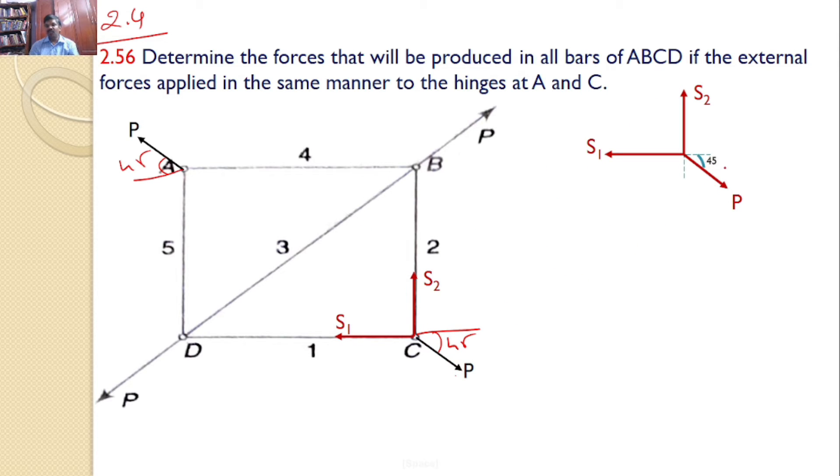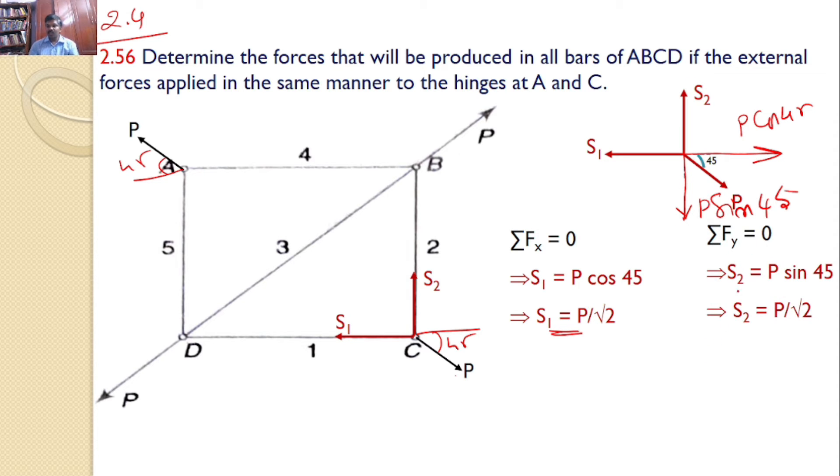And you know that P makes an angle 45 with the horizontal. So, you can resolve this force P along x-axis and y-axis. The horizontal component becomes P cos 45. The vertical component becomes P sin 45. So, if you consider sigma fx equals 0, P cos 45 equals S1 or S1 equals P by root 2. Similarly, if you consider sigma fy equals 0, S2 equals P sin 45 and S2 is also equals to P by root 2.